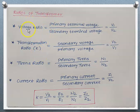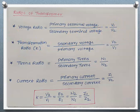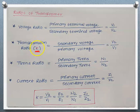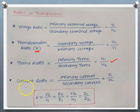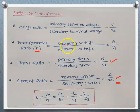There are four ratios of a transformer. The voltage ratio is the ratio of primary terminal voltage to secondary terminal voltage, i.e., V1 upon V2. The transformation ratio is the ratio of secondary voltage to primary voltage, denoted by capital K. The turns ratio is N1 upon N2, and the current ratio is primary current upon secondary current, I1 upon I2.